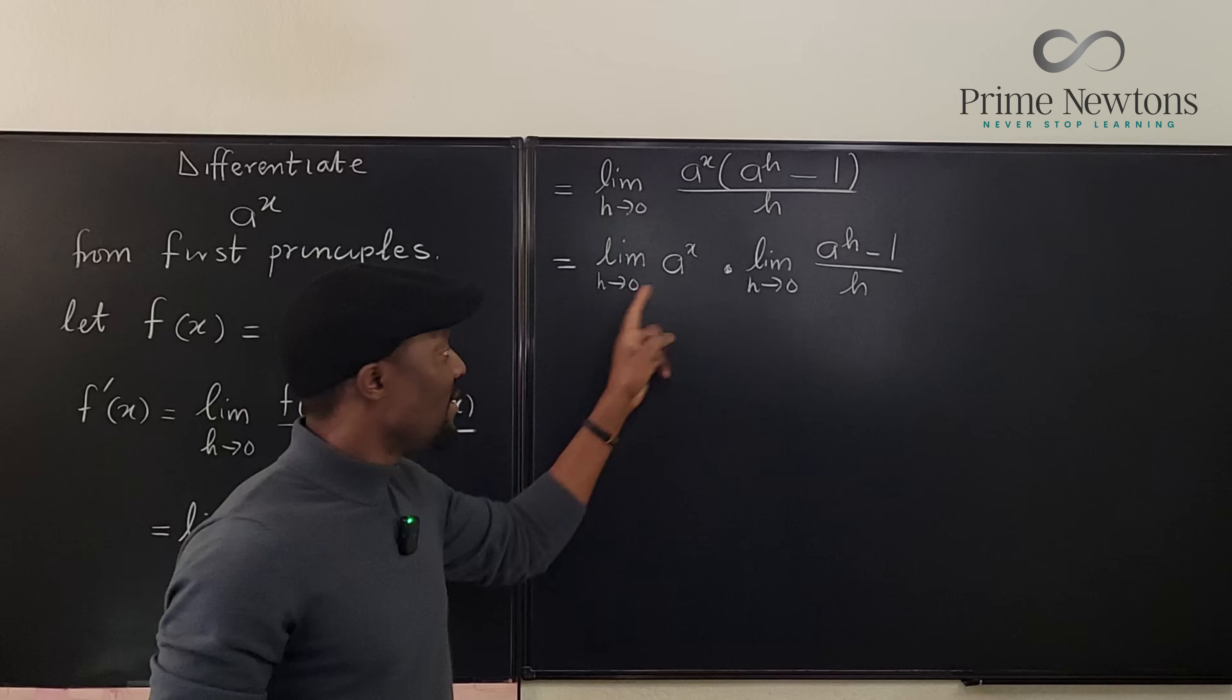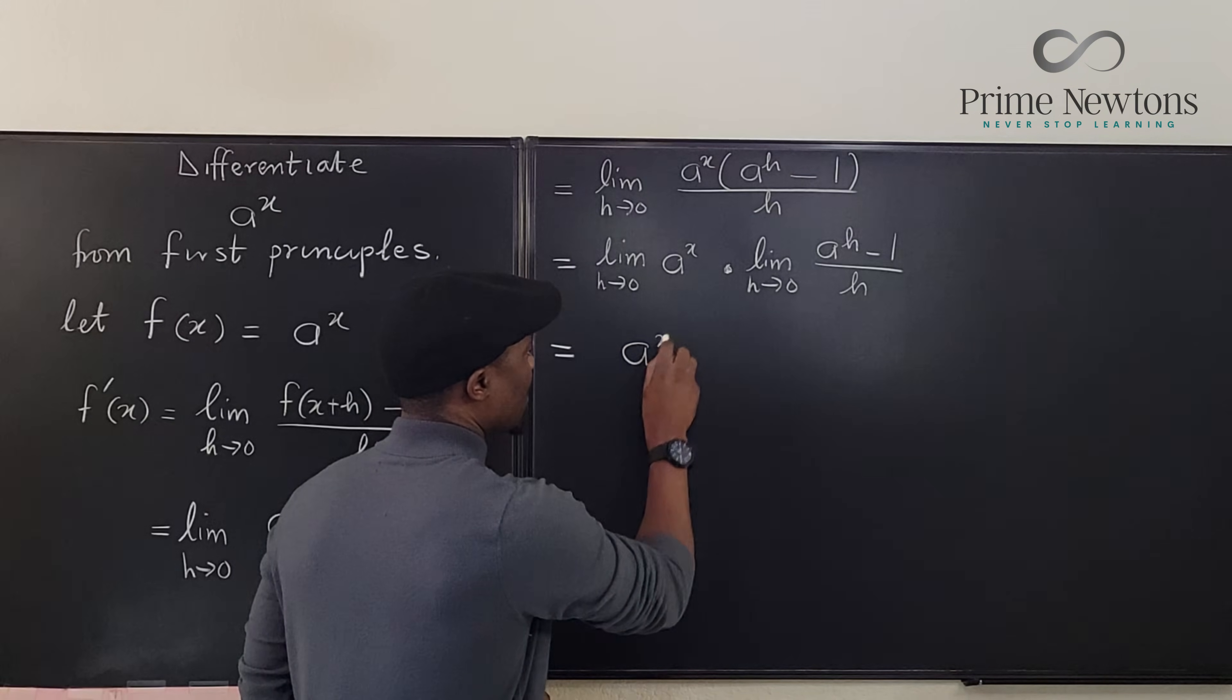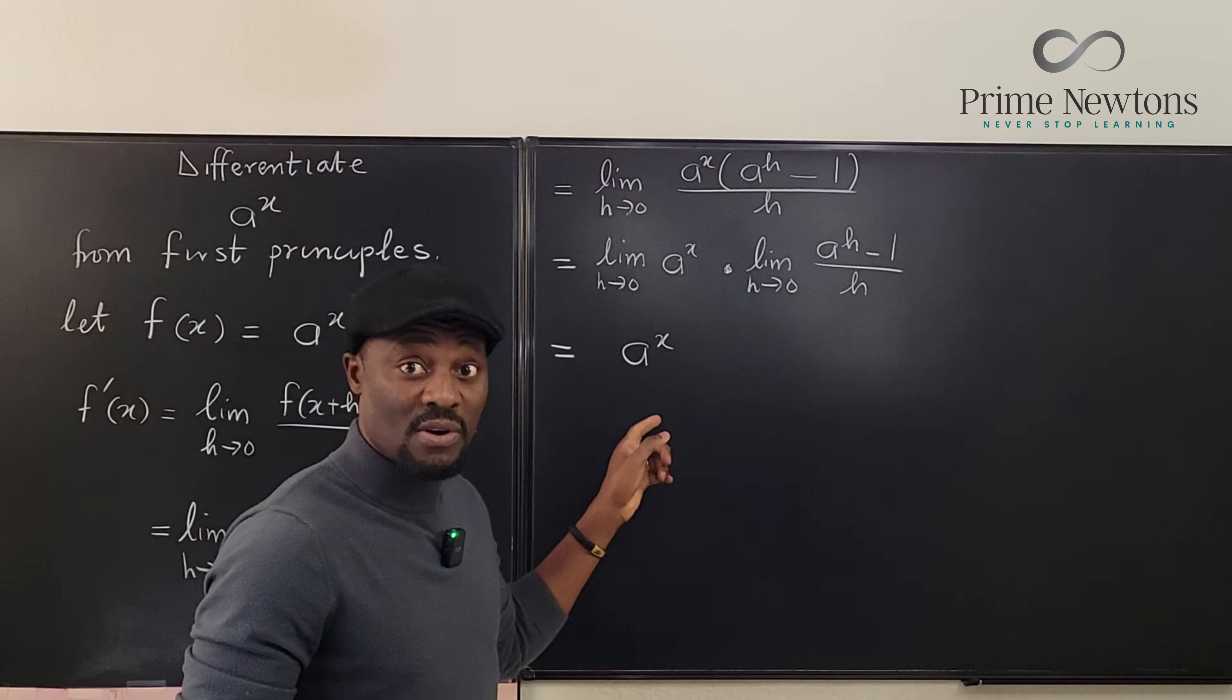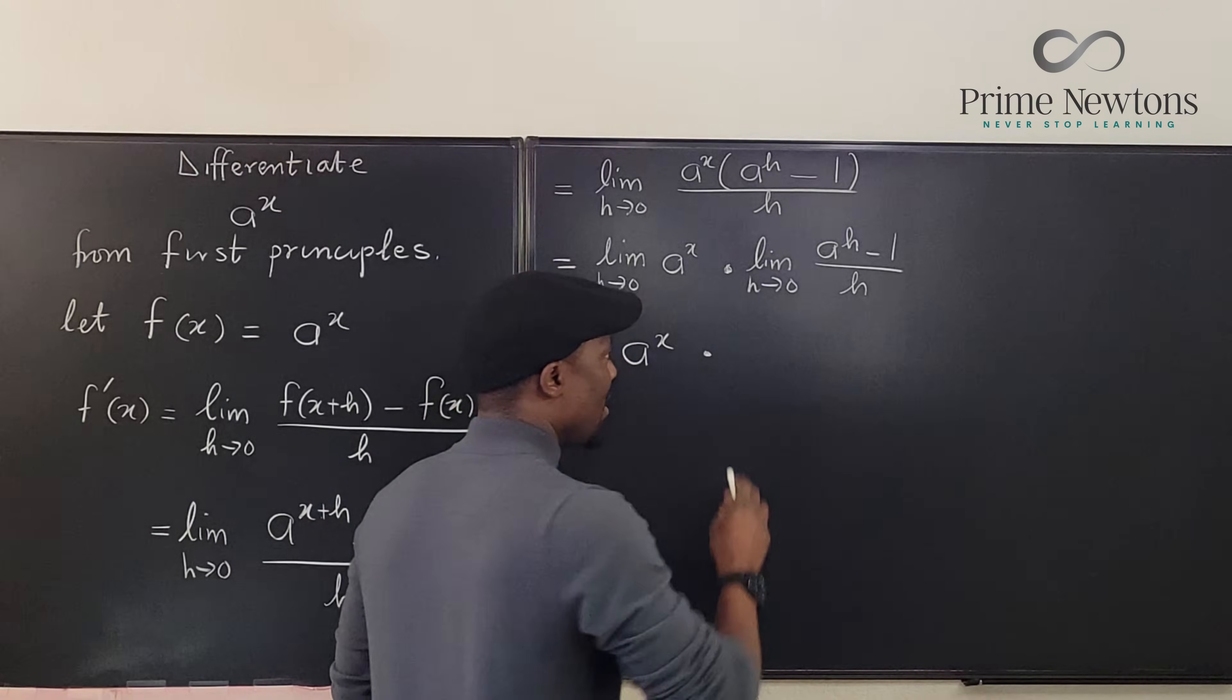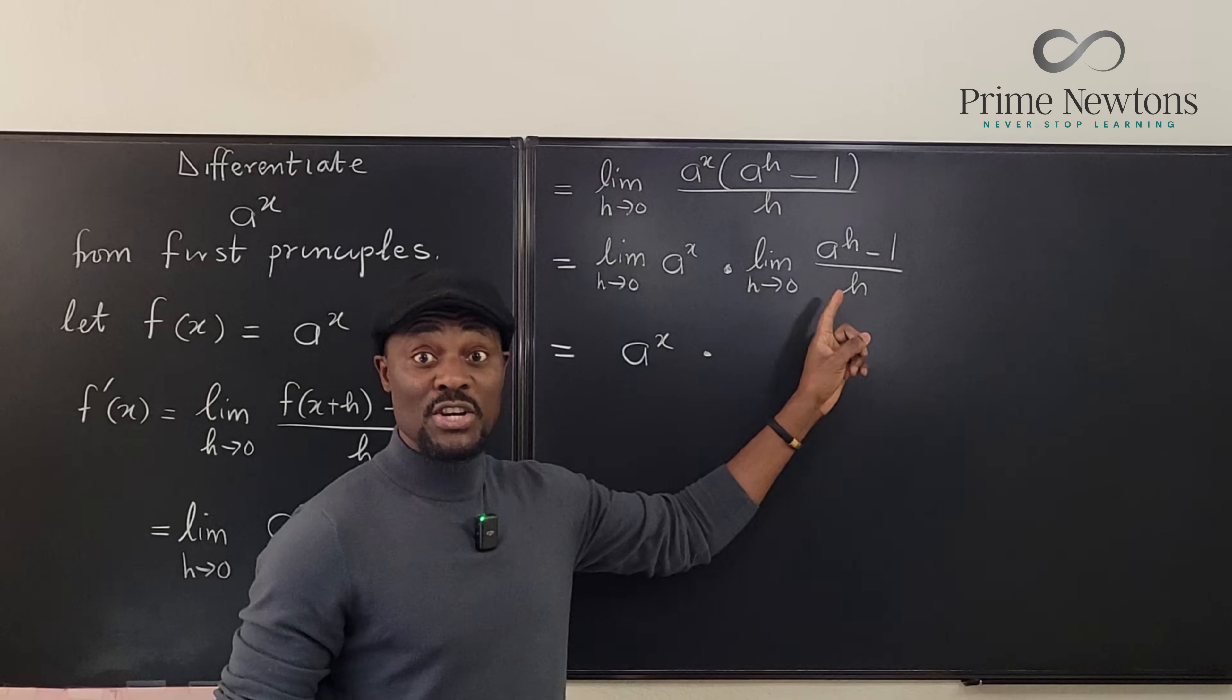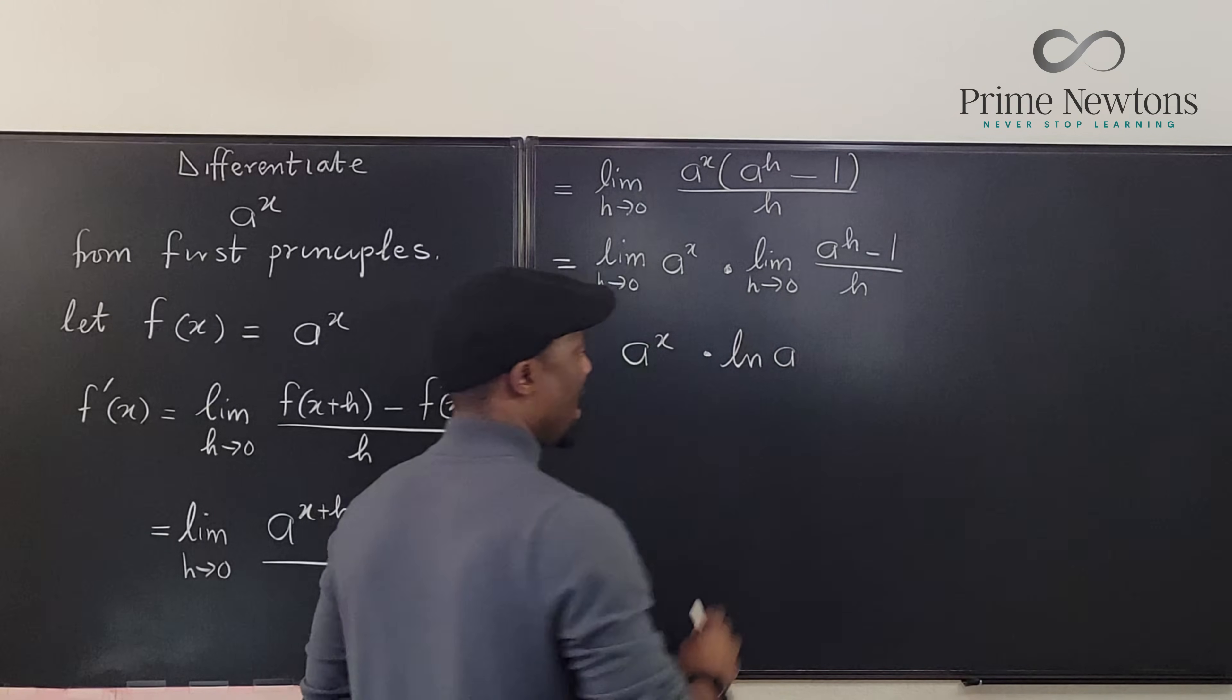Okay what does that do for me? Well the limit of a, now relative to h this is a constant because there's no h involved in this so my answer is basically a to the x. But when I get here I get a limit. What really is this limit? That's the whole point of this video. You need to know this as a calculus student. The answer to this is the natural log of a.